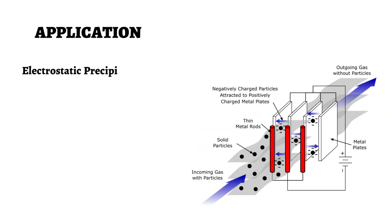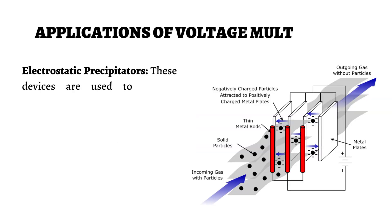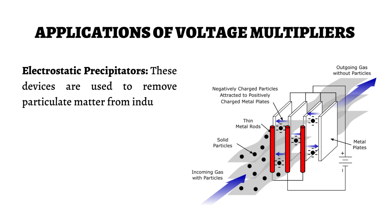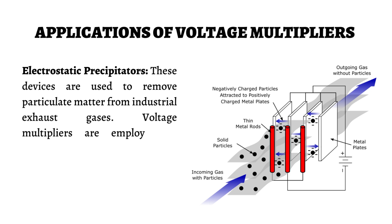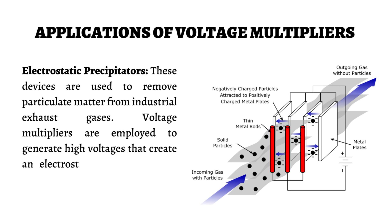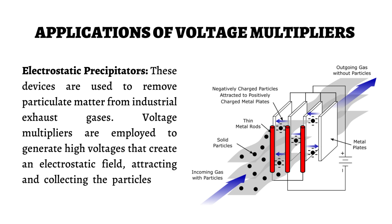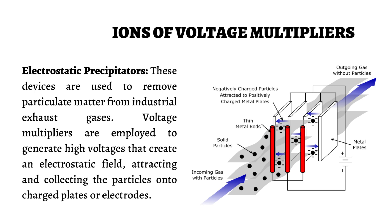Electrostatic precipitators are devices used to remove particulate matter from industrial exhaust gases. Voltage multipliers are employed to generate high voltages that create an electrostatic field, attracting and collecting the particles onto charged plates or electrodes.